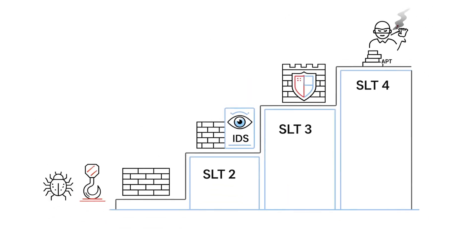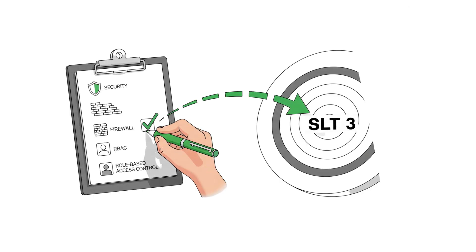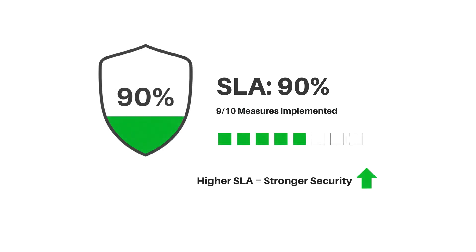Higher SLT levels require stronger controls to counter more advanced threats. But how do you know if you've achieved your target? That's where SLA — Security Level Achieved — comes in. SLA is calculated by assessing how well your system meets the required SLT. For example, if your system has implemented 90% of the required measures, your SLA is 90%. A higher SLA means stronger security.